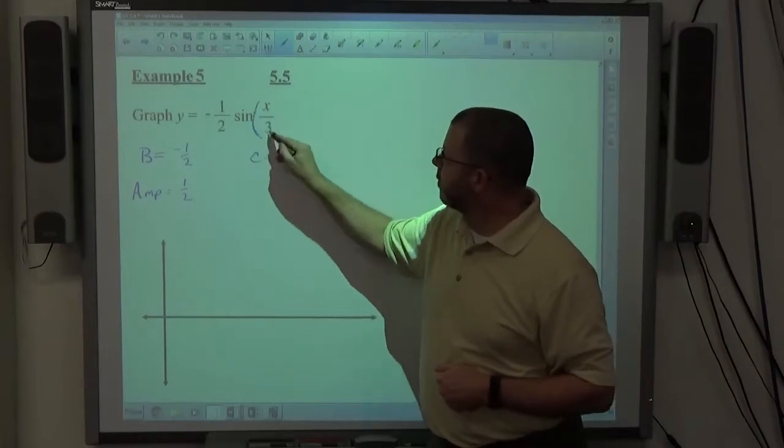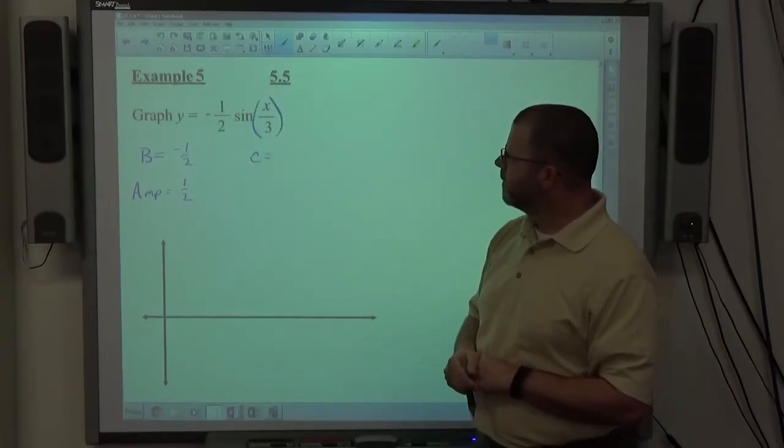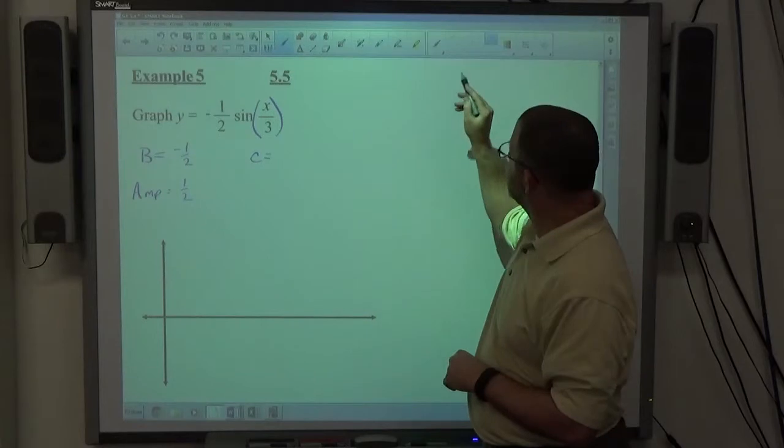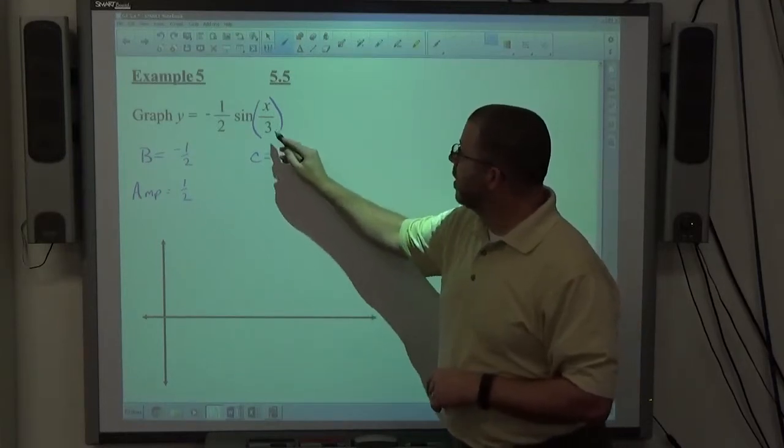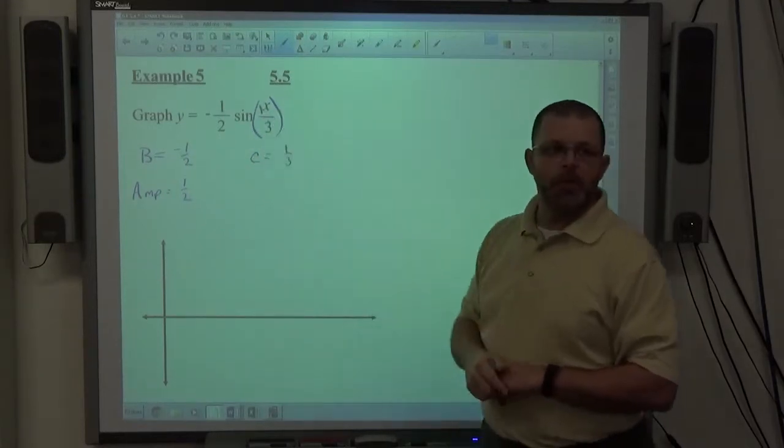This is what we're taking sine of, right? What's being multiplied by X? One third, right? There's an understood 1 in front of the X, so one third is being multiplied by the X.